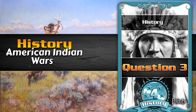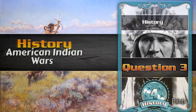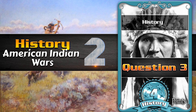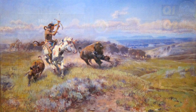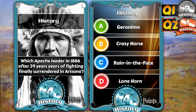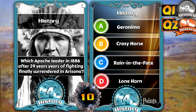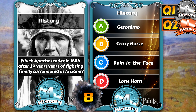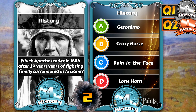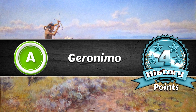Question 3. History. American Indian Wars. Which Apache leader in 1886, after 29 years of fighting, finally surrendered in Arizona? Geronimo. Crazy Horse. Rain in the Face. Lone Horn. 3, 2, 1. The answer is Geronimo.